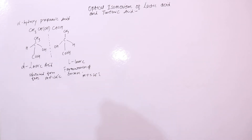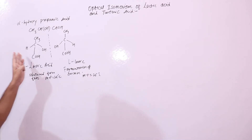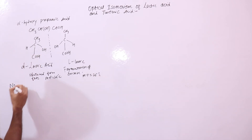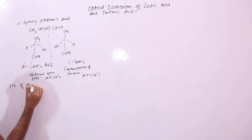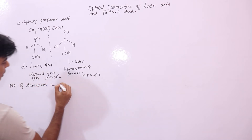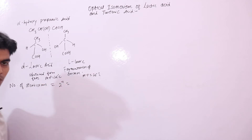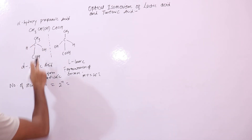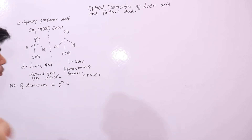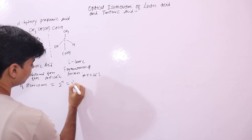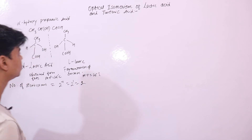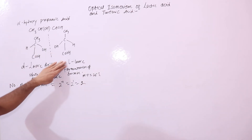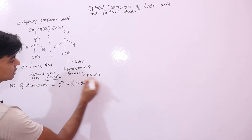How many stereoisomers will lactic acid have? The number of stereoisomers is given by 2 to the power of N, where N stands for the number of chiral carbons. Here we have only one chiral carbon, so 2 to the power of 1 equals 2. We have two stereoisomers — the D form and the L form — and both have a melting point of 26 degrees Celsius.